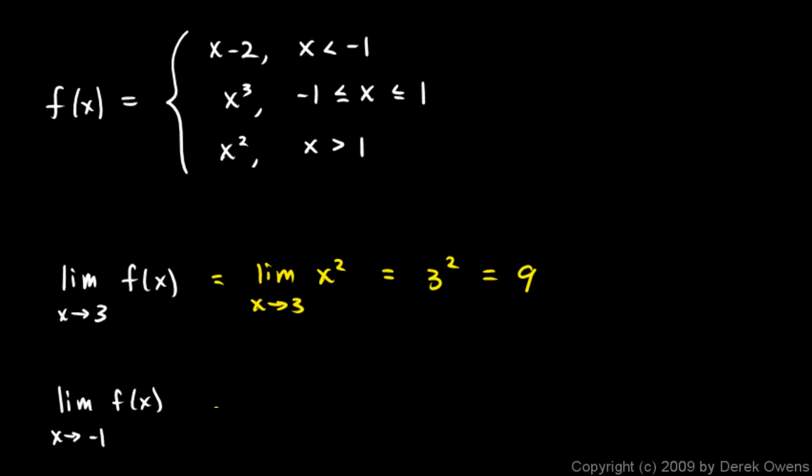The next problem here. The limit as x approaches negative 1 of f of x. Well, if x is less than negative 1, we have one expression. And if it's greater than negative 1, we have another. So let's find those one-sided limits. Let's talk about the limit as x approaches negative 1 from the left. And to find that, we just plug negative 1 into this expression. Because this is where x is less than negative 1. So it becomes negative 1 minus 2, which is negative 3.